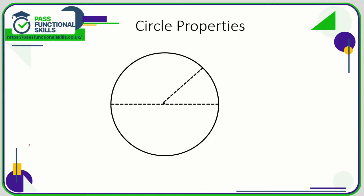Let's take a look at circle properties. As far as circles are concerned, there are really only four terms you need to remember. The first one is dead easy — the dot in the middle of the circle is the center. The edge of a circle, the perimeter of a circle, is called the circumference.